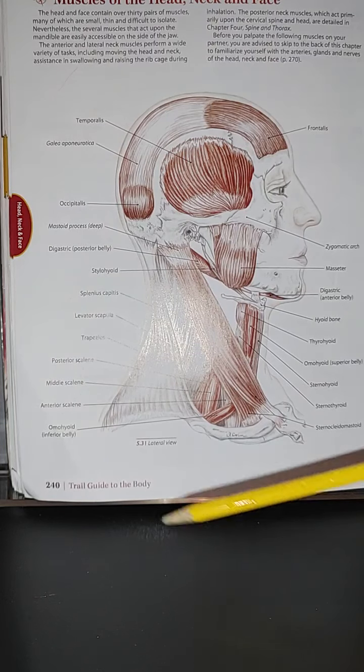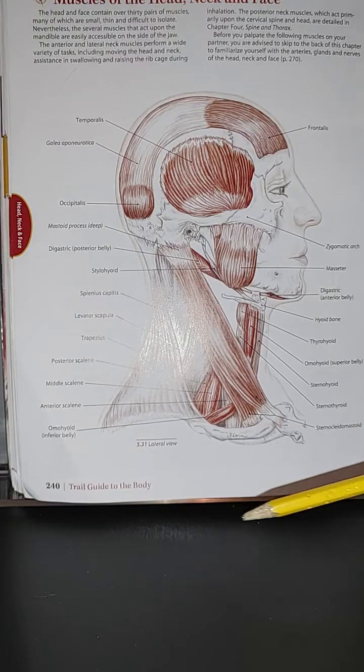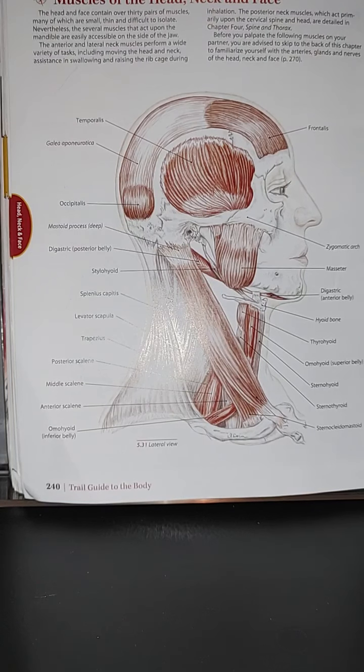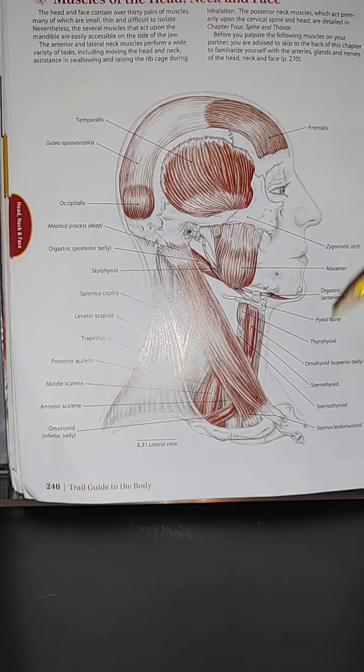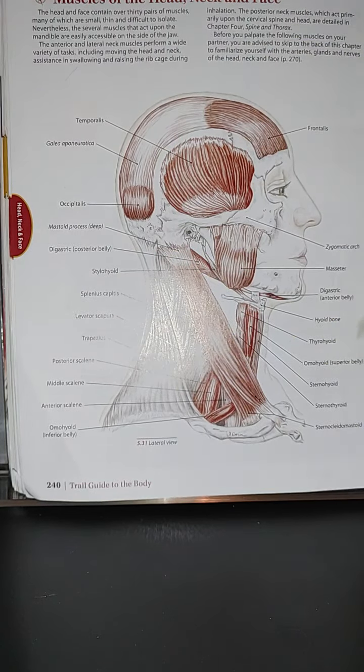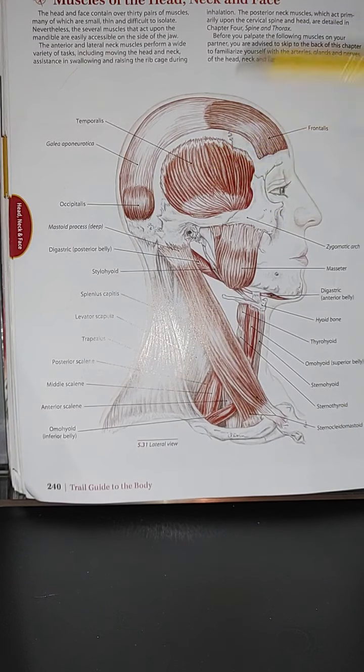Hi guys, so we are at page 240 of Trail Guide to the Body. We're presenting muscles of the head, neck, and face. Looking at the image here, we can see all the muscles.